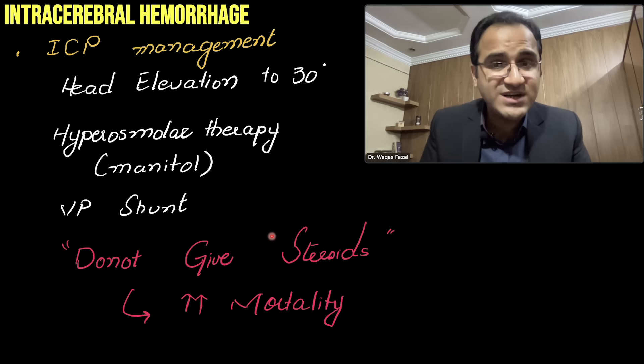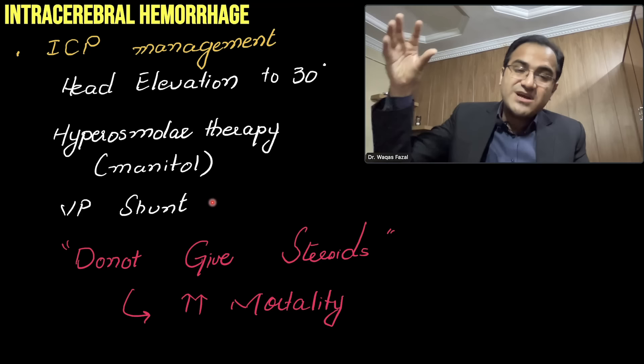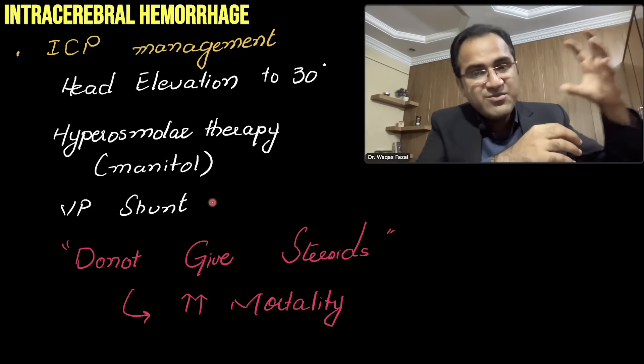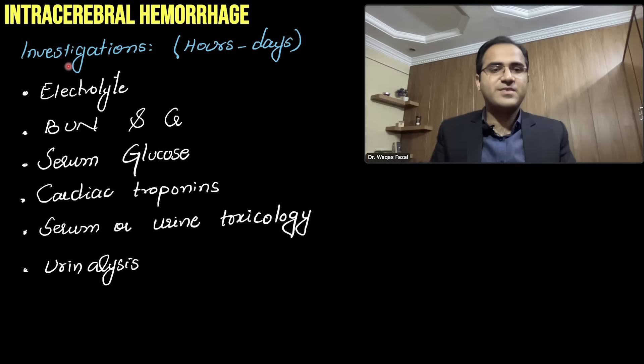Importantly, do not give steroids to patients with increased intracranial pressure due to intracerebral hemorrhage. Steroids are used in patients with tumors causing increased ICP, but in ICH they are not given because they increase mortality.